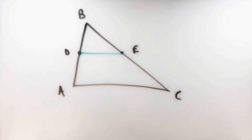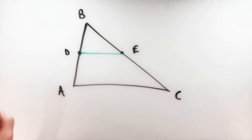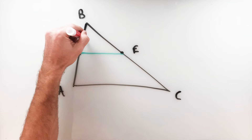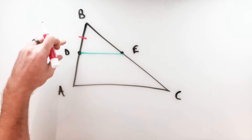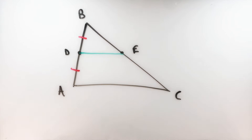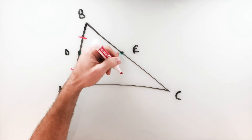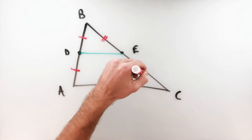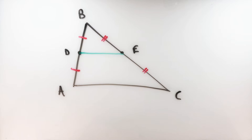Now there's a neat little theorem that relates a mid-segment to the other sides of the triangle, but before I give it away I want to play around with this figure. Remember, a midpoint divides a segment into two congruent segments. So segment AB has been cut into two congruent segments: BD and DA are the same length. On the other side, BE and EC are also congruent to one another.